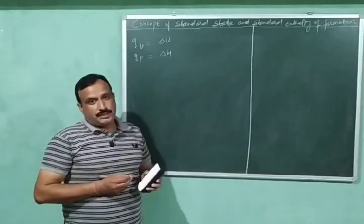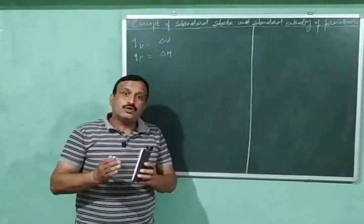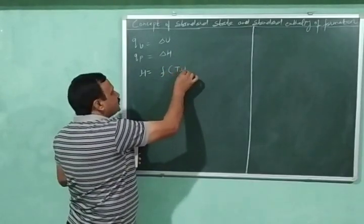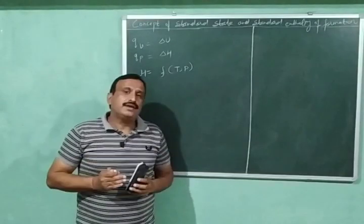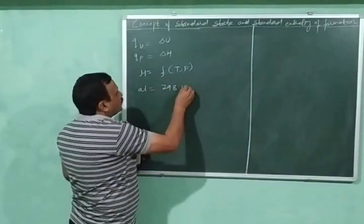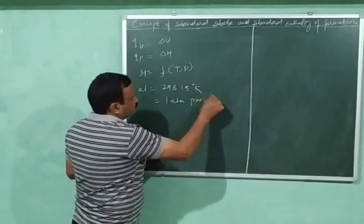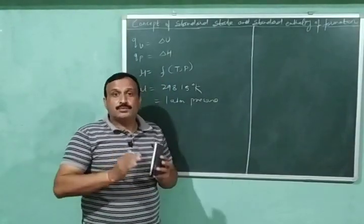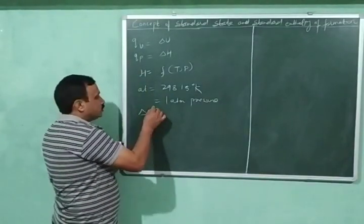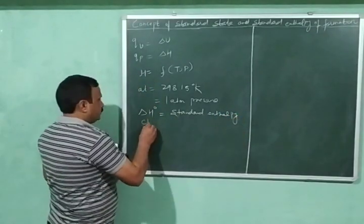Now let us discuss the concept of standard state. The molar enthalpy of a substance depends upon temperature and pressure — molar enthalpy means the enthalpy of one mole of a substance. If every reactant or product of a chemical reaction is at 298.15 K and one atmospheric pressure, then the enthalpy change during this reaction will be called the standard enthalpy change, represented by the symbol delta H⁰.